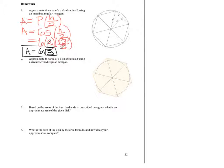Number 2. Approximate the area of a disk of radius 2 using a circumscribed regular hexagon. We have 6 equilateral triangles, where the altitude is equal in length to the radius of the circle.